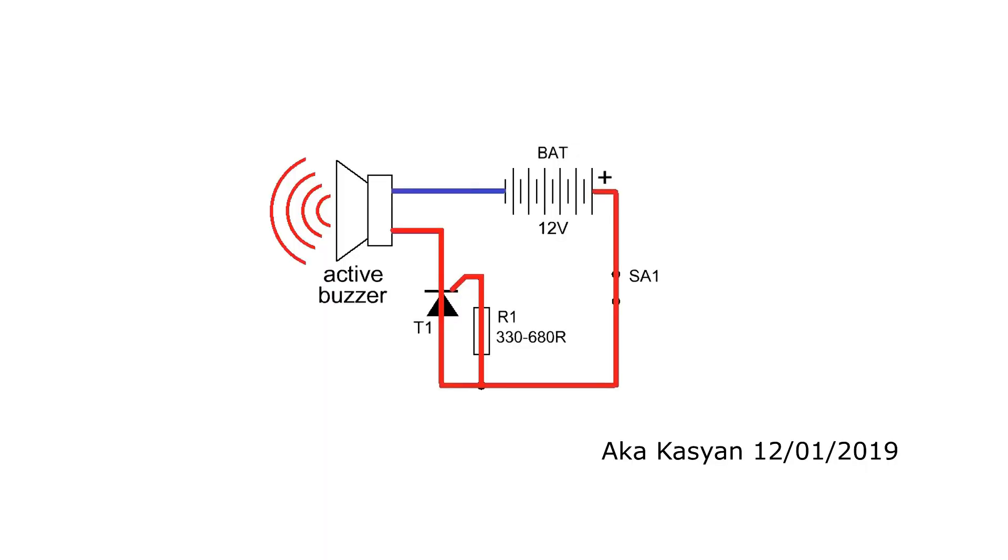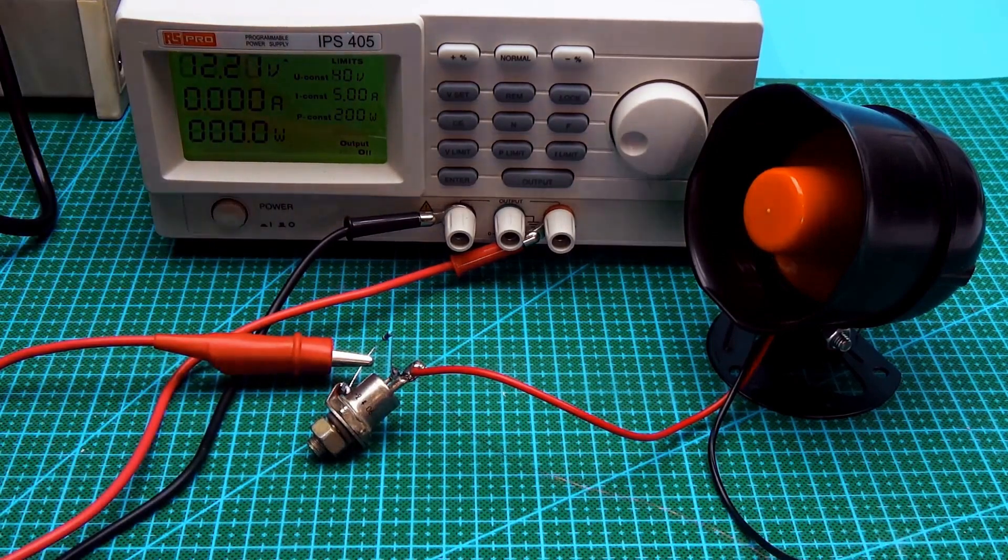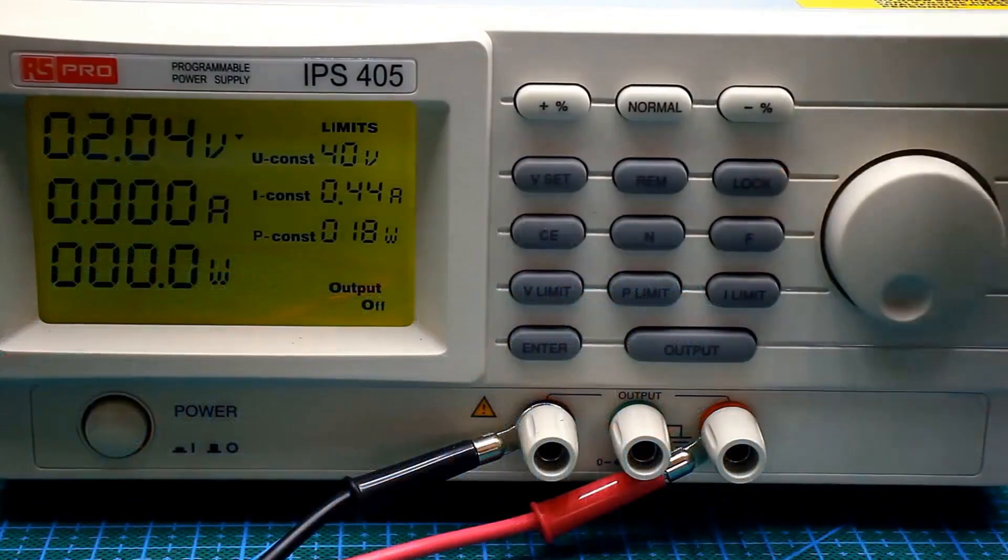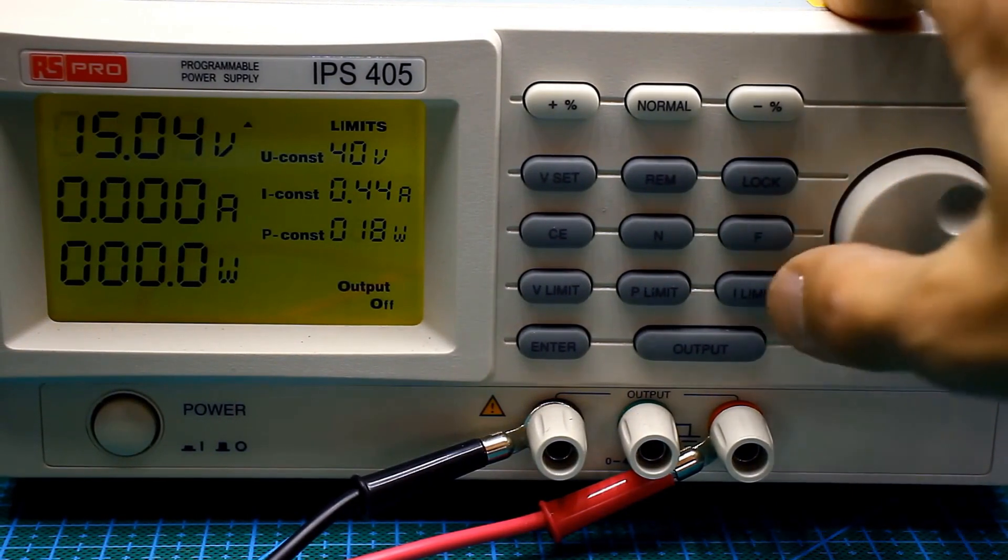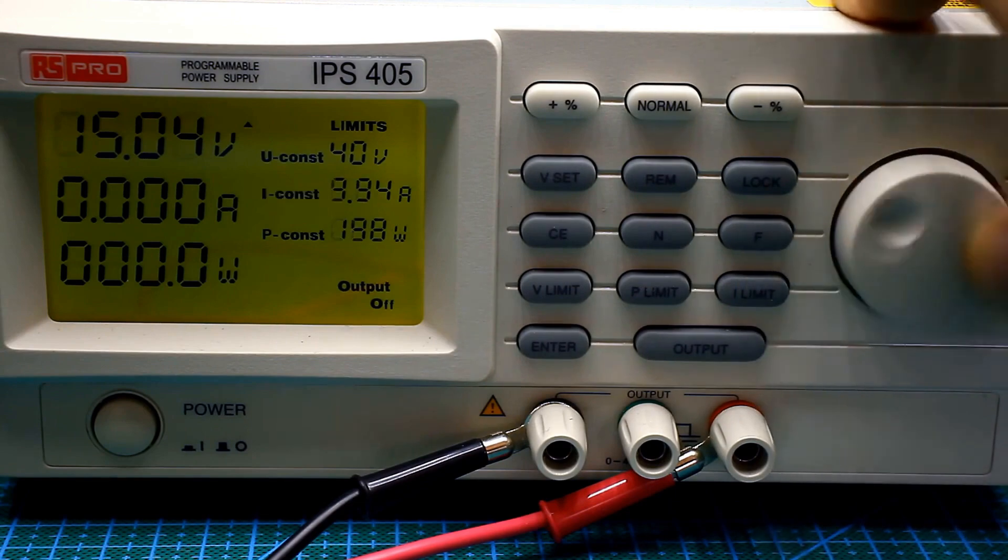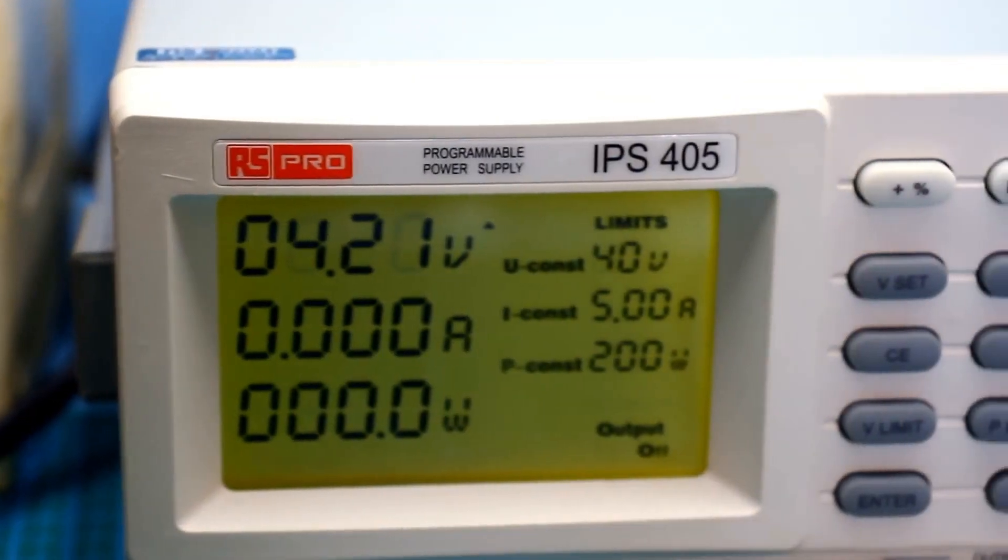To close the thyristor, the voltage needs to be temporarily removed, meaning the power must be turned off and then back on, or a closing button can be added, as shown in the picture. However, this method is highly undesirable to use if a powerful power source is involved. In my case, for the experiment, a laboratory programmable power supply IPS405 from RS was used. This is a professional stabilized power supply at 40 volts 5 amps with a functional display.